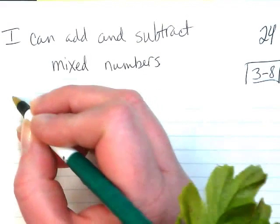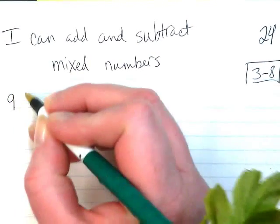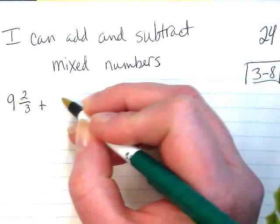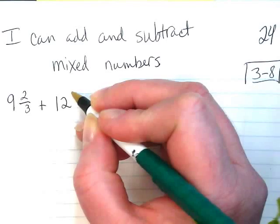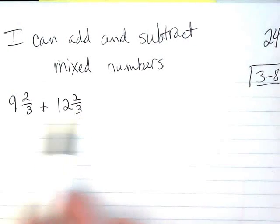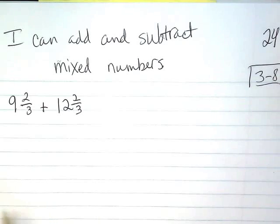We'll start off with the example for adding 9 and 2 thirds plus 12 and 2 thirds. Notice both denominators are the same, so that's going to make our lives easy.